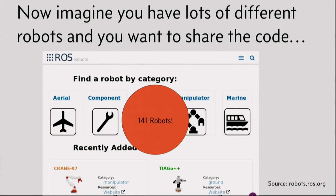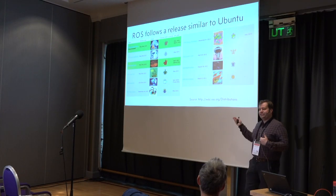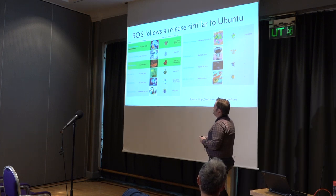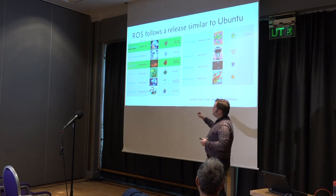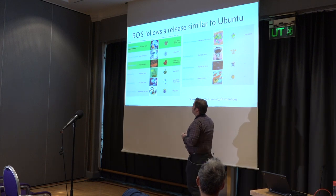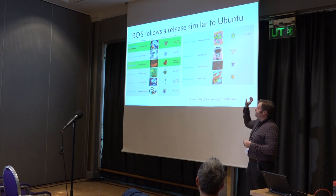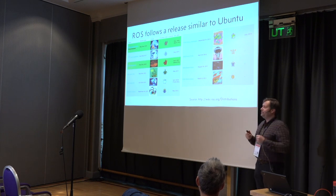ROS has standardized on an Ubuntu distribution and has releases that follow Ubuntu releases. Right now there are two active distributions in green, following Ubuntu's long-term release schedule. They all have wonderful animal names based on sea turtles - Kinetic Kame and Melodic Morinia. These stay supported until end-of-life, with some incremental releases tied to other Ubuntu releases. In general, they've standardized on Ubuntu.